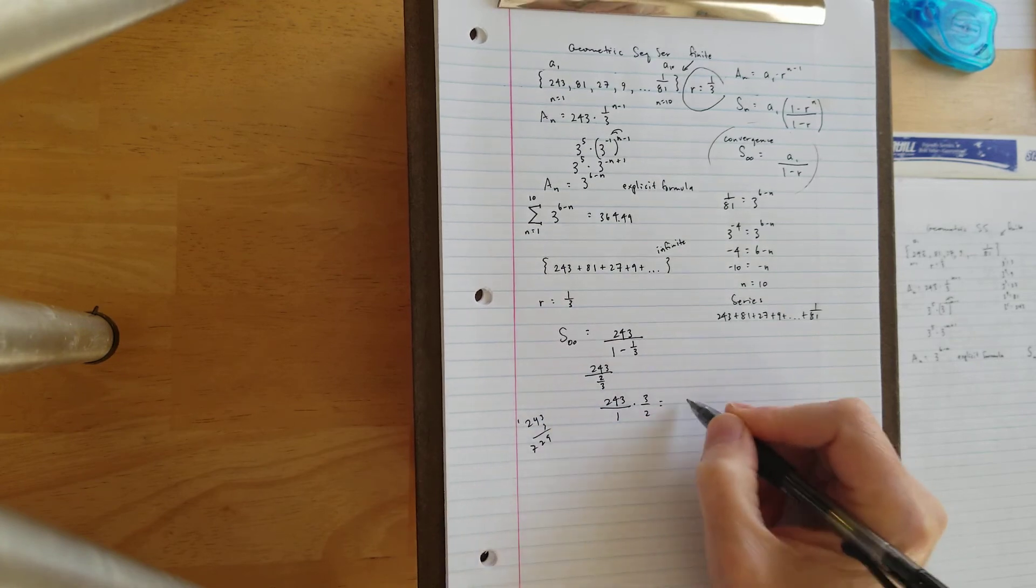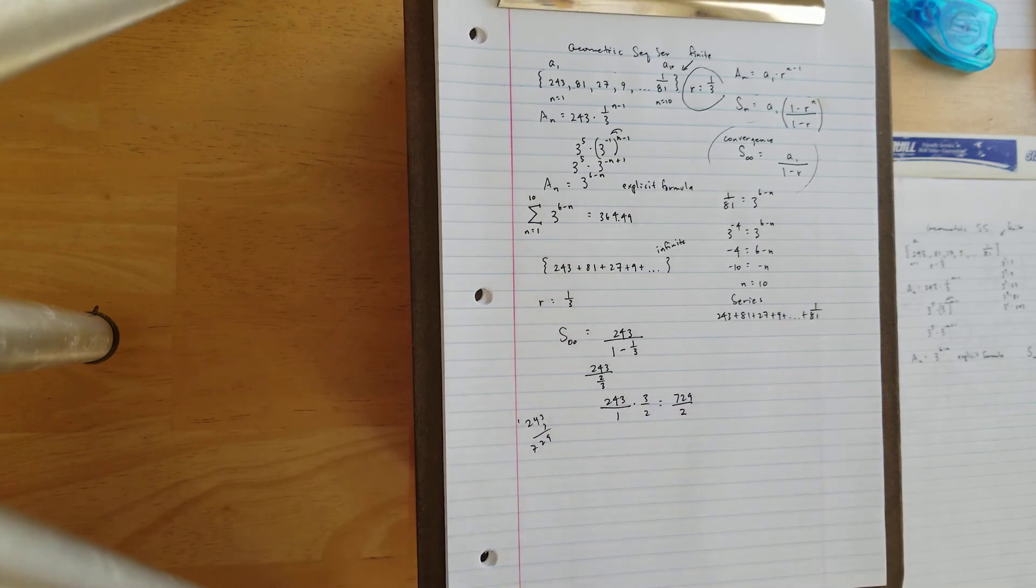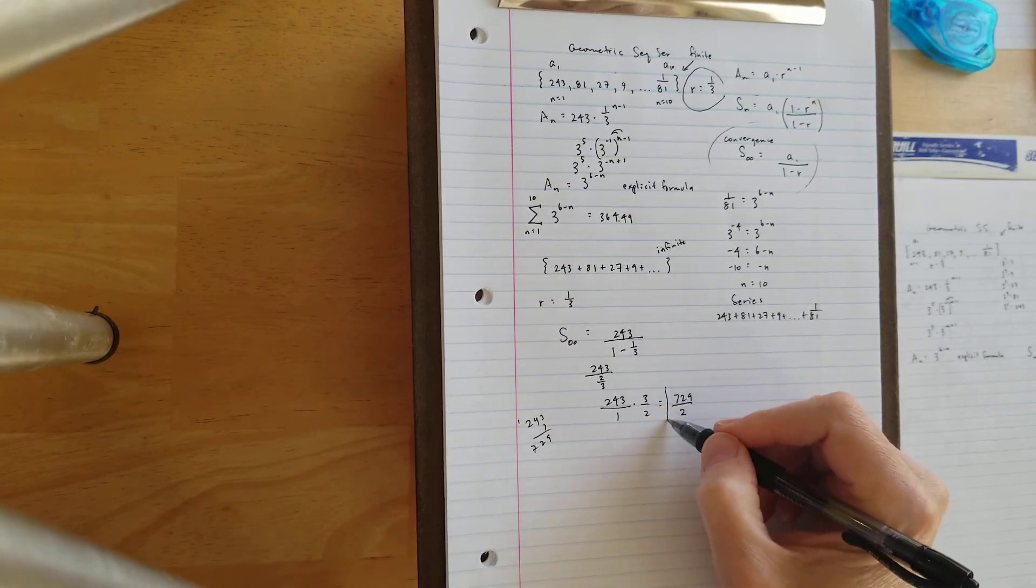729 over 2 is going to be our infinite sum.